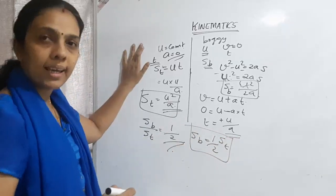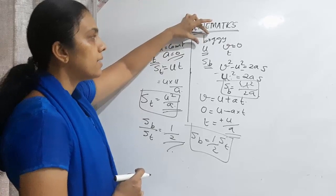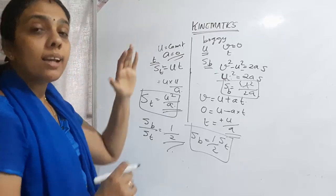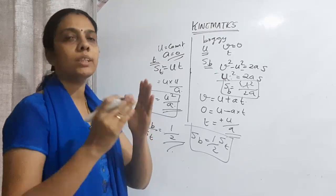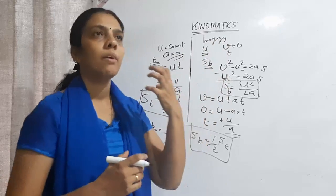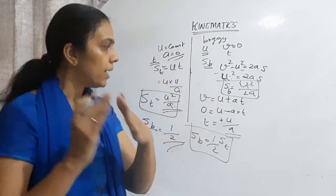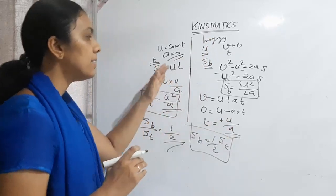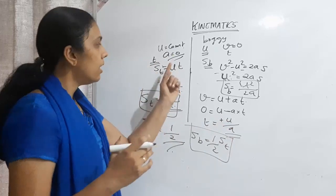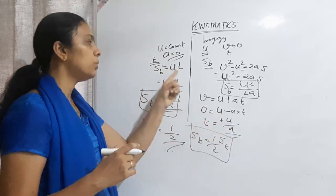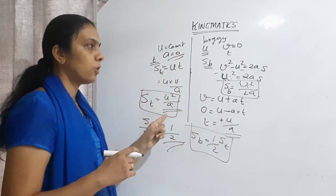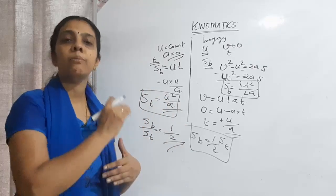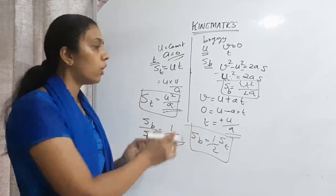So here we find the distance traveled by the boggy and the distance traveled by the train in the same time interval — specifically the time until the boggy stops, which is t = u/a. Substituting the respective values, we get the relation: the boggy's distance is half of the train's distance. The answer is that the first is half of the second.